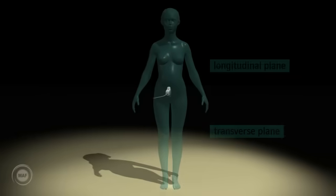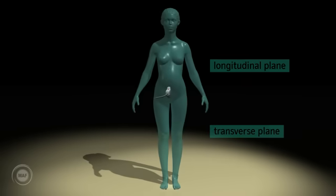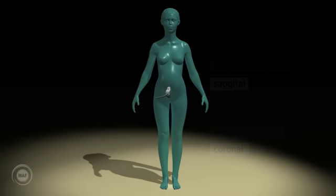Longitudinal and transverse are used when referring to the position of the probe. The terms sagittal and coronal are used when referring to the view obtained by the probe of the mother or fetus.